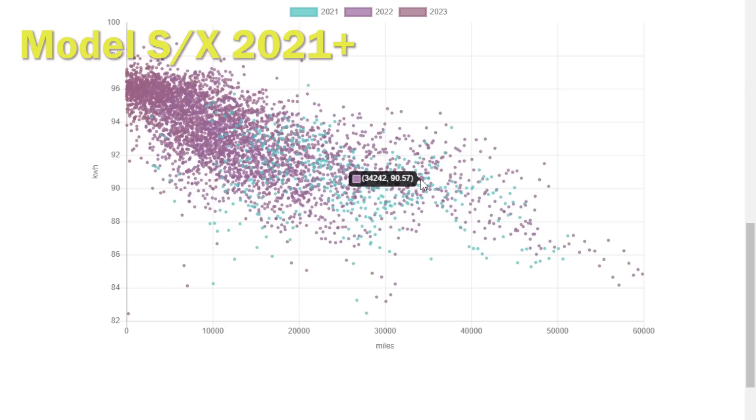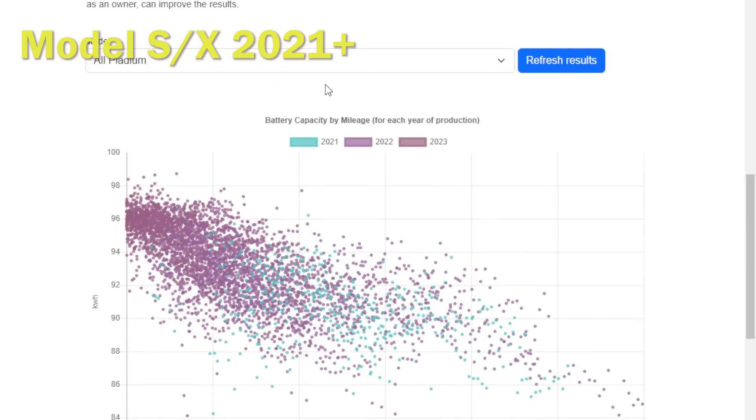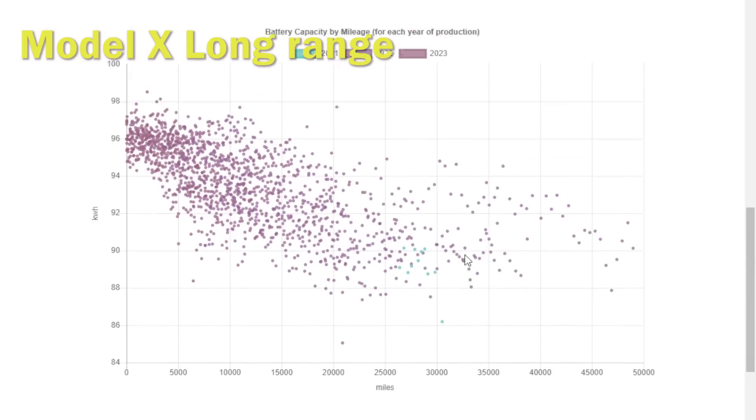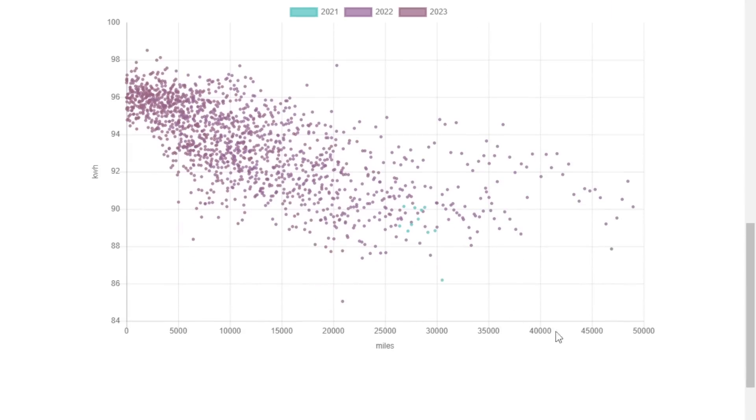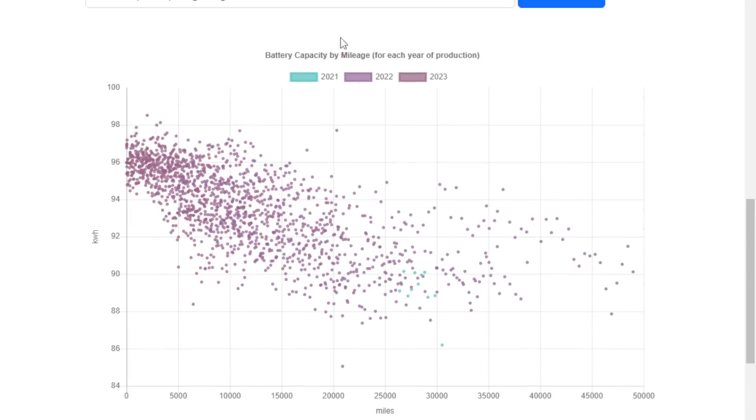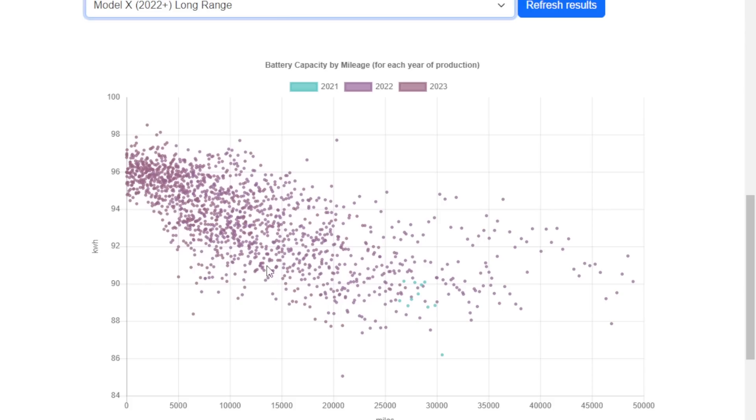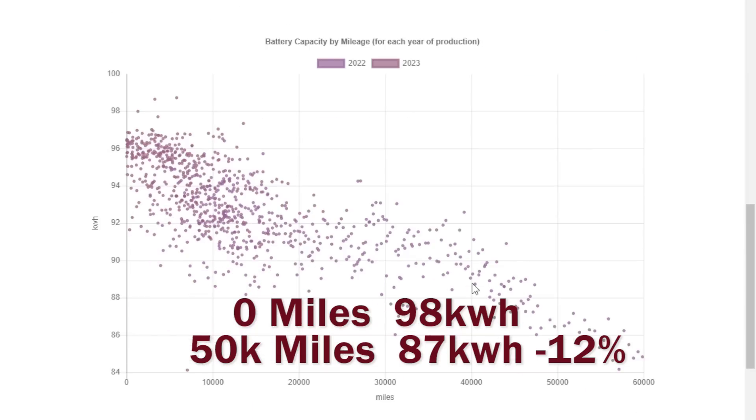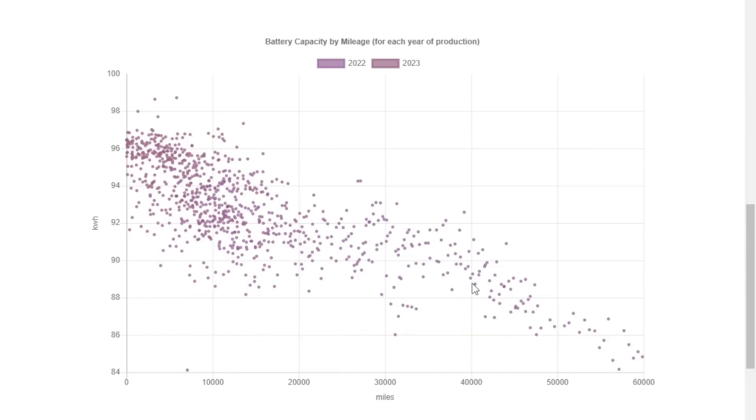If we split those results now between the long range and the Plaid, we'll see the long range on the Model X at least seems to be leveling off around 50,000 miles at around 90 kilowatt hours. Whereas if we switch to the Plaid, it seems to just keep going down at 12 percent down at 50,000 miles, and even the ones at 60,000 miles, they're down to sort of 85 kilowatt hours—it's almost 15 percent down, which is a worry.